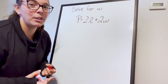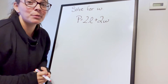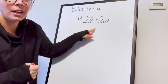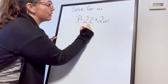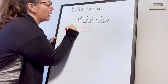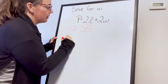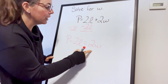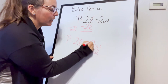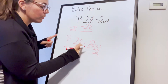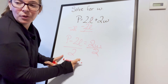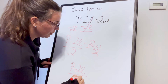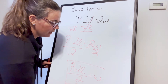Now, what does it look like to solve an equation with multiple variables? Here we're solving for W, so our goal is to get W by itself. I'll subtract 2L from both sides to get P minus 2L equals 2W. Then I divide both sides by 2, giving the final answer: W equals P minus 2L all divided by 2.